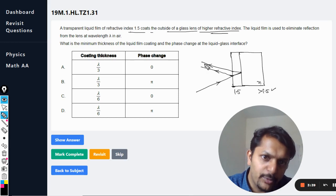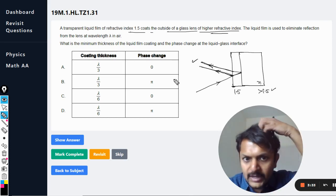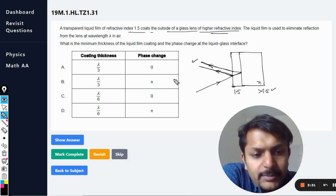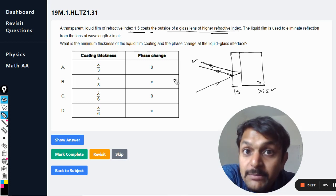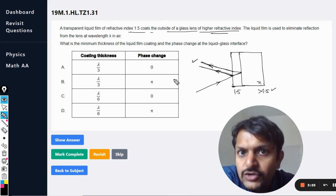So both of these rays are now having reflection, so they are now able to interfere with each other. But because we want that the reflection should be minimized, it means that destructive interference should take place here.